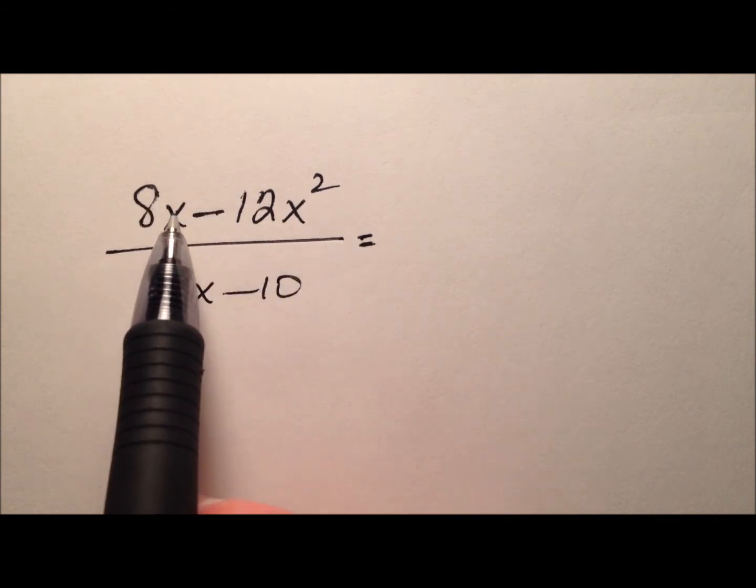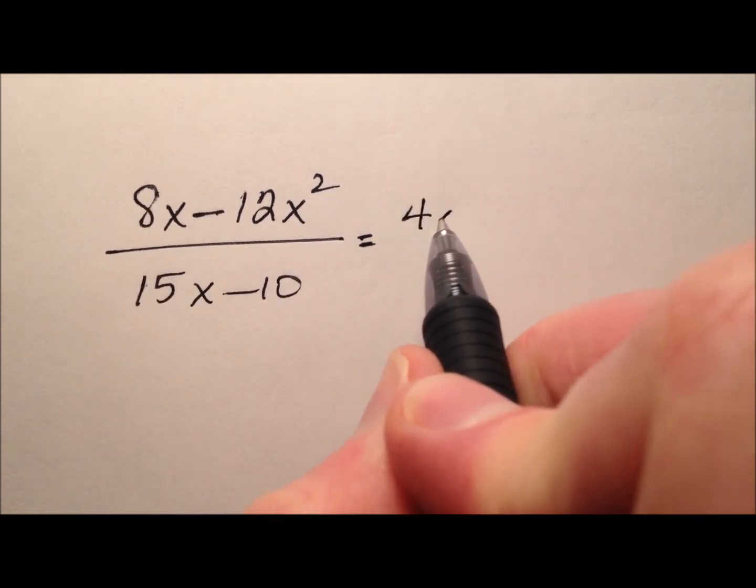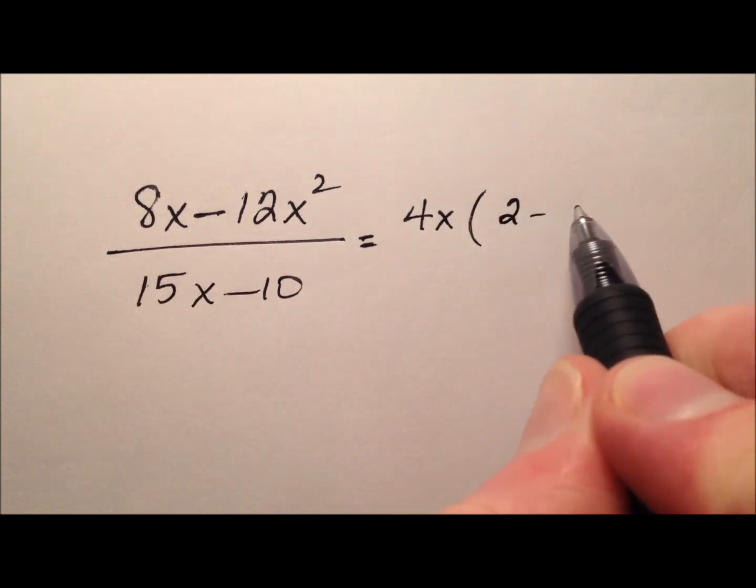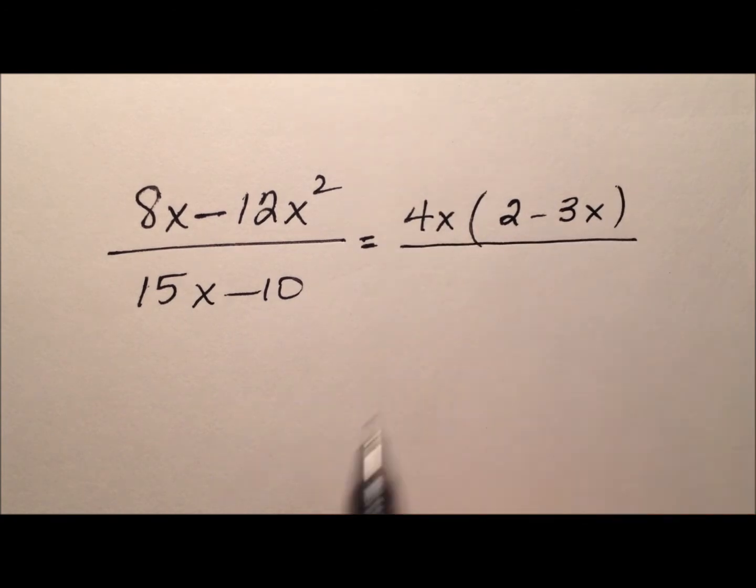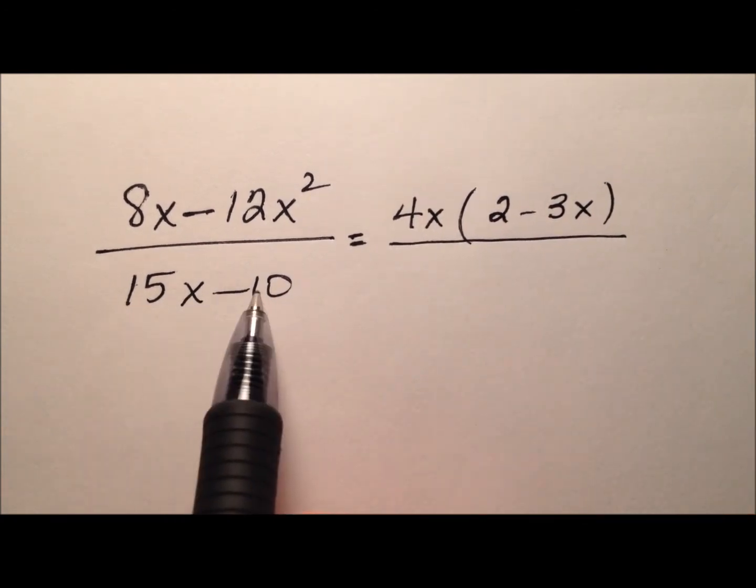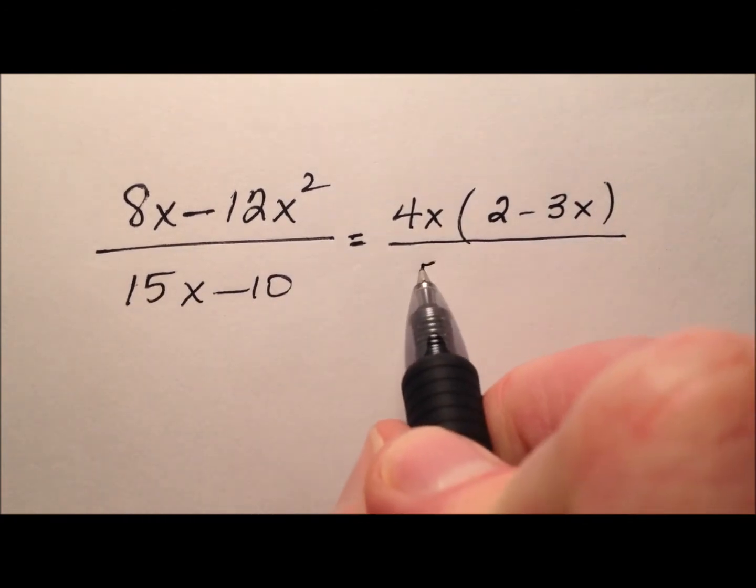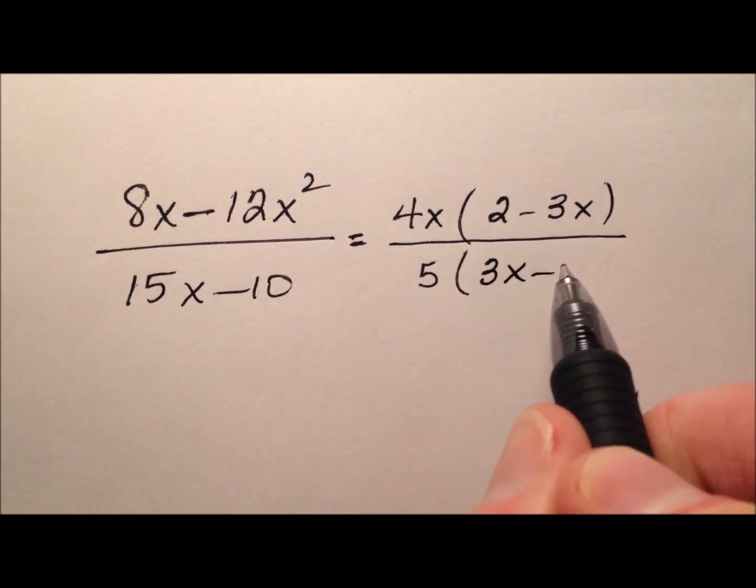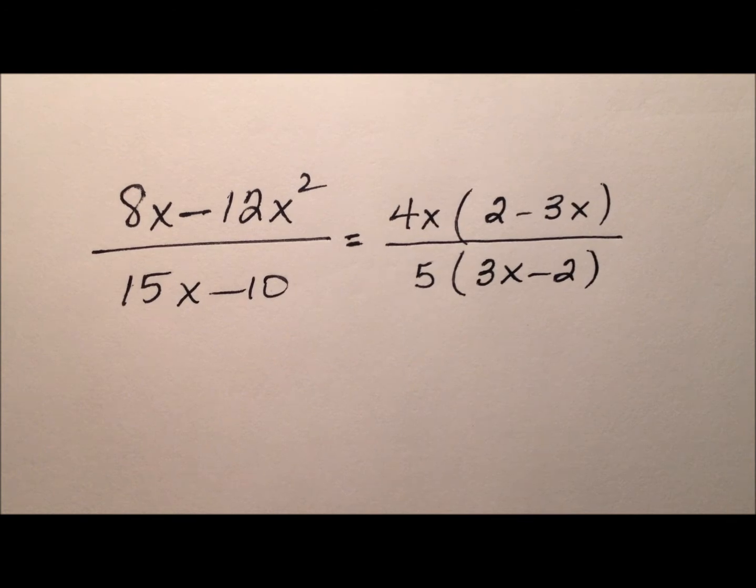Looks like I can take a 4x out. And when I do that, I'm left with 2 minus 3x. In the denominator, it looks like I can take a 5 out. And when I do that, I'm left with 3x minus 2.